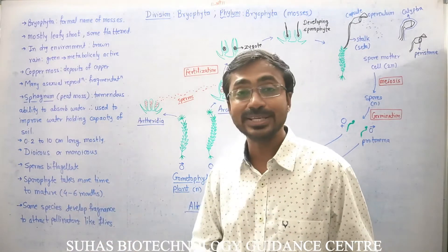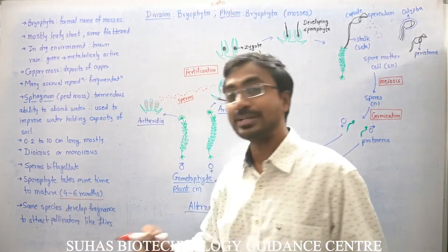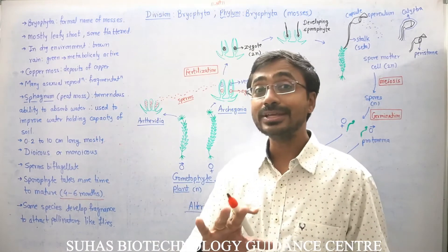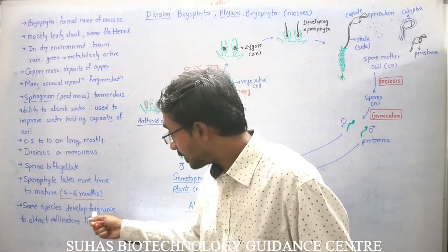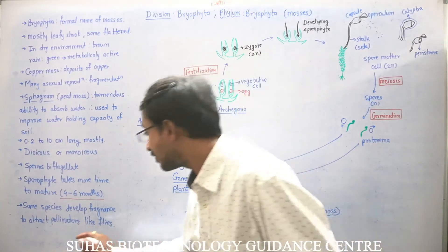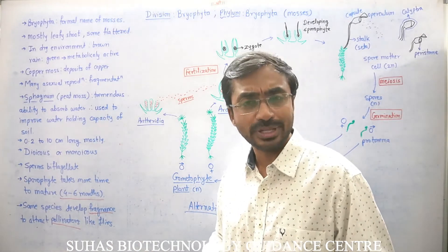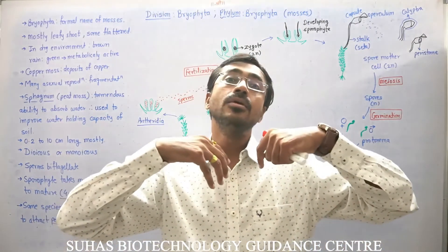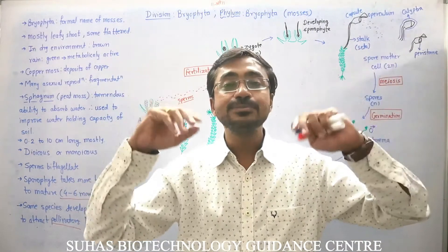The sporophyte takes more time to develop — generally four to six months — so the sporophyte is very slow. That is also why the sporophyte is completely dependent on the gametophyte, making gametophyte the dominant generation. Some species develop fragrant substances to attract pollinators like flies, not for pollination but as a way to disperse spores over longer distances.